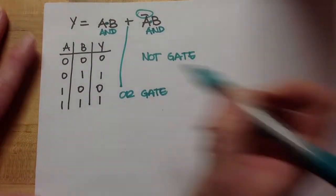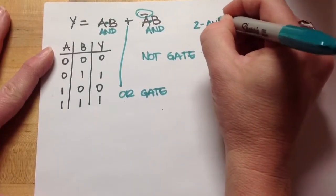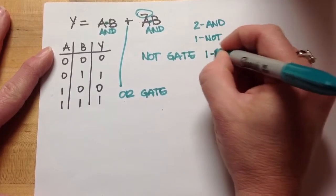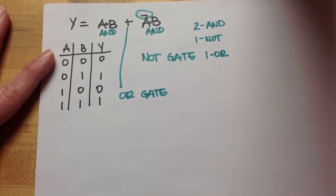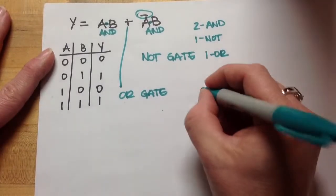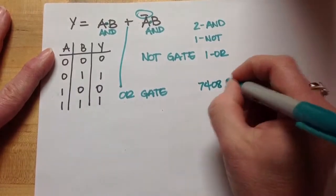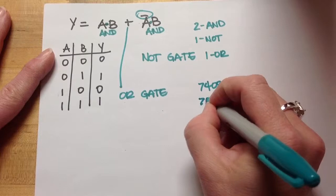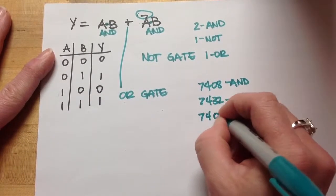So, if I've done all this right, I have two ANDs, one NOT, and one OR. And it's important for you to get familiar with these numbers: an AND gate is a 7408, an OR gate is a 7432, and a NOT is a 7404.